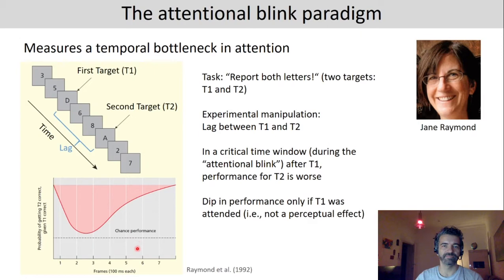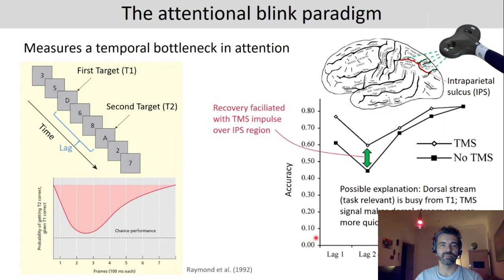Interestingly you can actually help the visual system or attention to recover more quickly. This was tested in this experiment by Cooper and colleagues. So they used TMS, Transcranial Magnetic Stimulation, to activate the intraparietal sulcus IPS. And when they did that, the dip in performance is less severe with this TMS. So there is a facilitated recovery due to the TMS impulse over the IPS region. A possible explanation is that the dorsal stream that is processing task relevant information is busy from processing T1. So the TMS signal makes the dorsal stream recover more quickly.